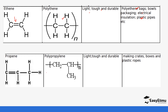Propene has a double bond, but when drawing the repeating unit we change the direction of the longest chain and place the CH₃ group to the side — otherwise the structure would look the same as polythene. This was explained in detail in our previous video on reactions of alkenes, the addition reaction. Polypropene is used to make crates, boxes, and plastic groups.